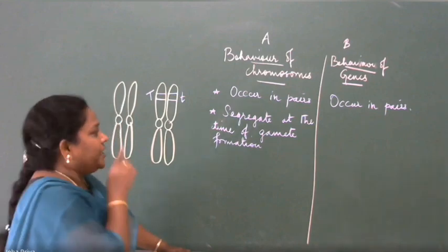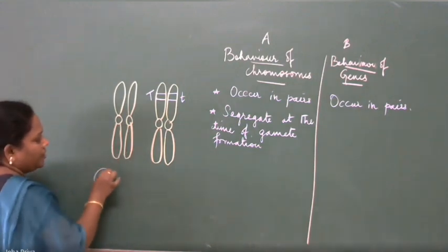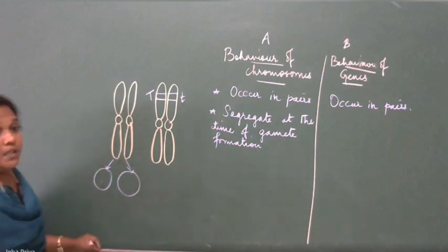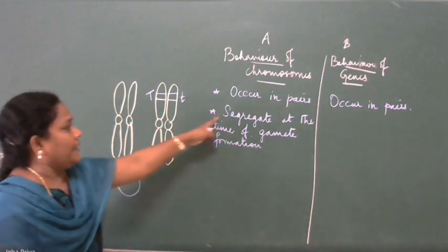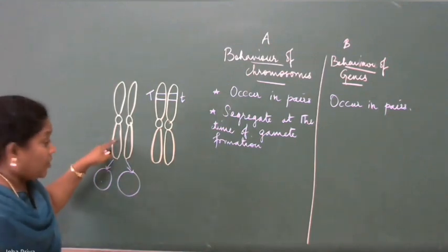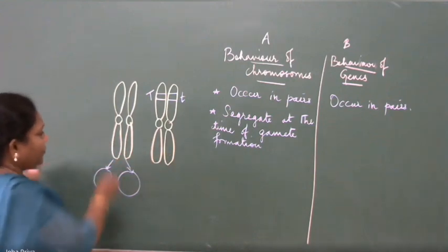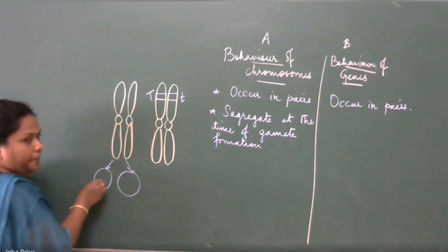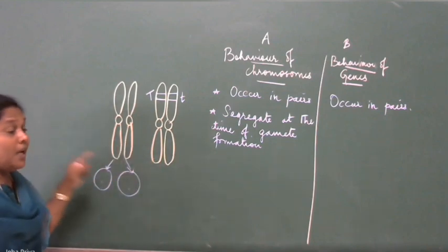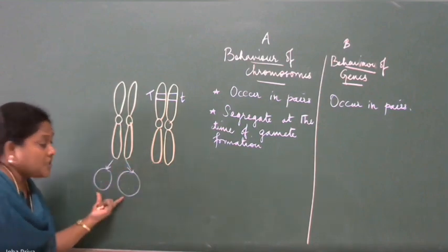Only one of each pair will be transmitted into a gamete. So if this is one chromosome, when two gametes are produced, one will move on here and the other one will move on here. The chromosomes segregate at the time of gamete formation such that only one of each pair is transmitted to a gamete.